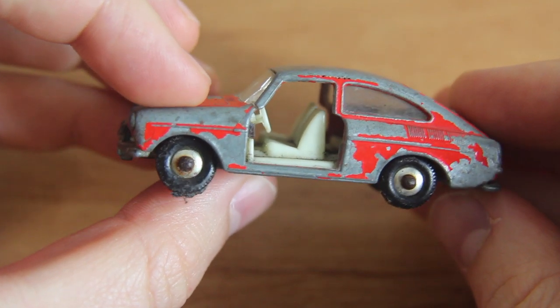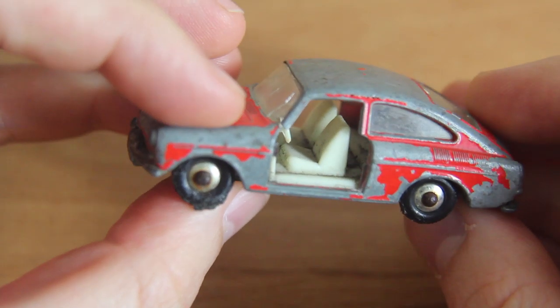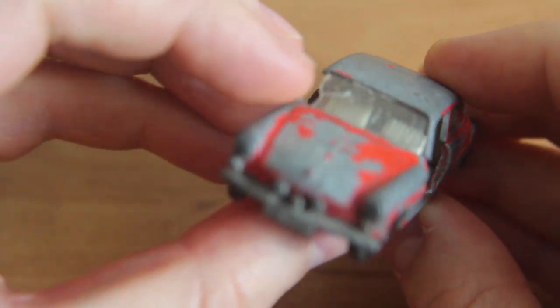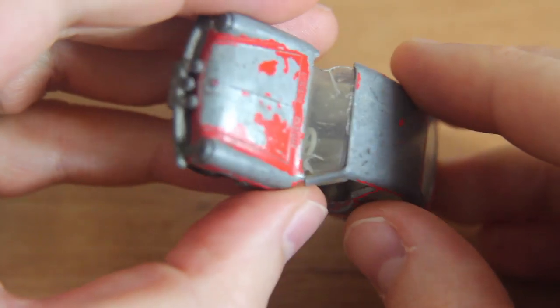Introduced into the Matchbox range in 1967, the casting is based on the 1600 TL fastback version of Volkswagen's Type 3 compact car that was built between 1961 and 1973.